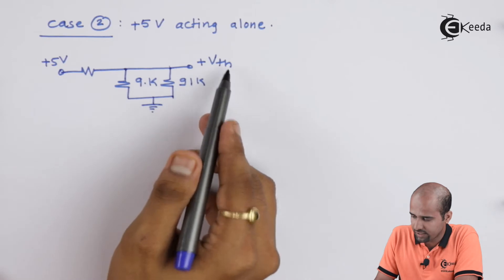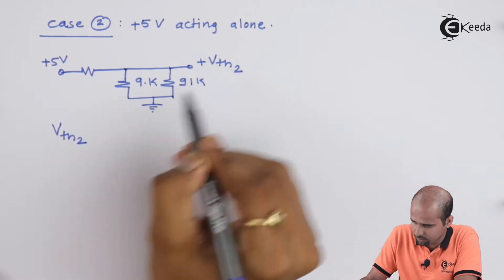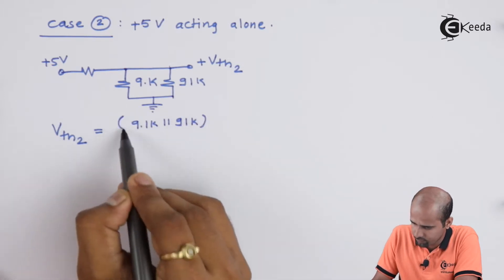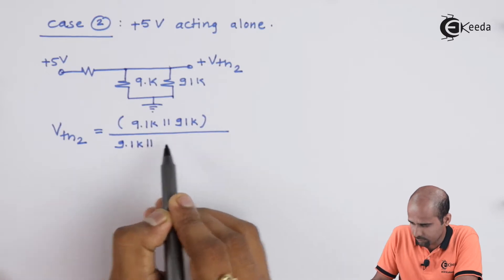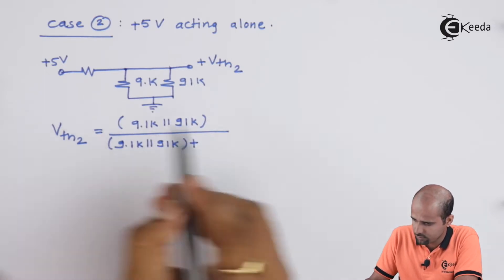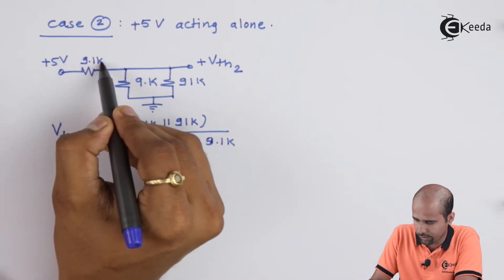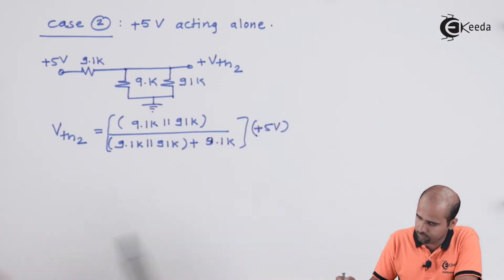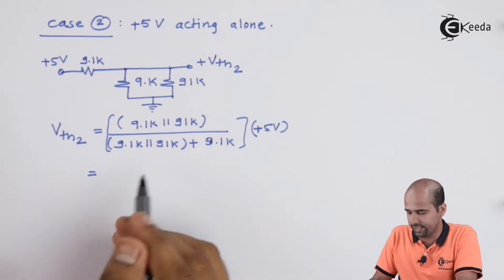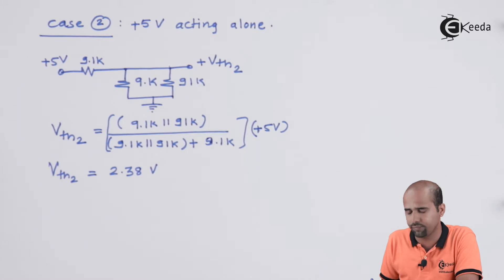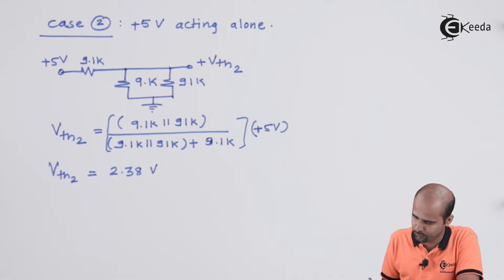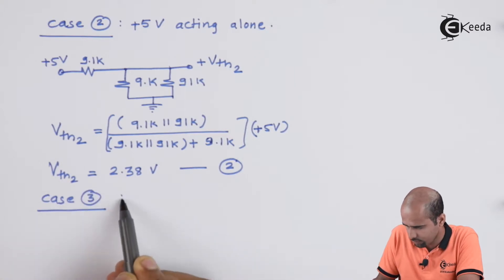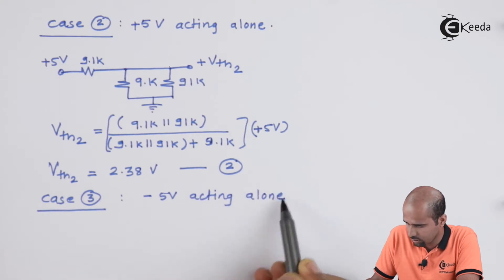Similarly applying VDR for case 2 (+5V acting alone): VTH2 = (9.1K ∥ 91K) / (9.1K ∥ 91K + 9.1K) × 5V = 2.38V. Now we apply case number 3: minus 5V acting alone.